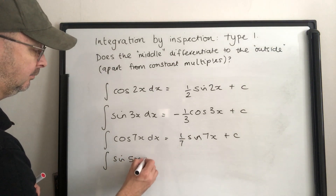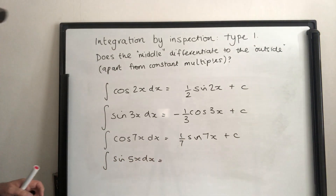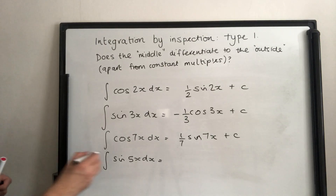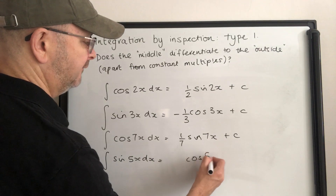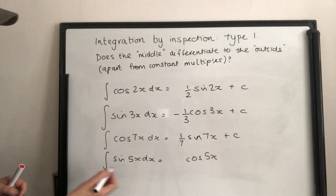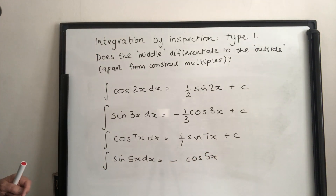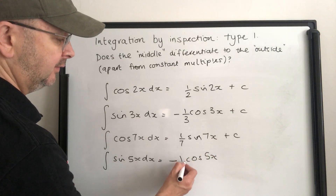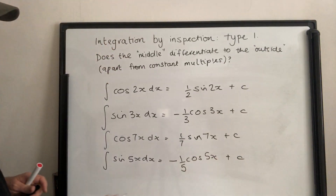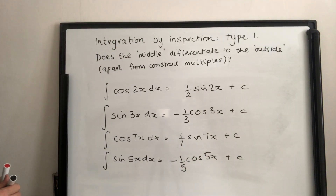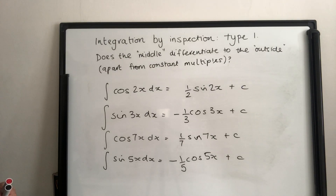For cos of 5x, applying the same principle — cos differentiates to minus sin, and 5x differentiates to 5 — so the integral is one fifth sin of 5x, plus c. The key question remains: does the middle differentiate to the outside, apart from constant multiples?